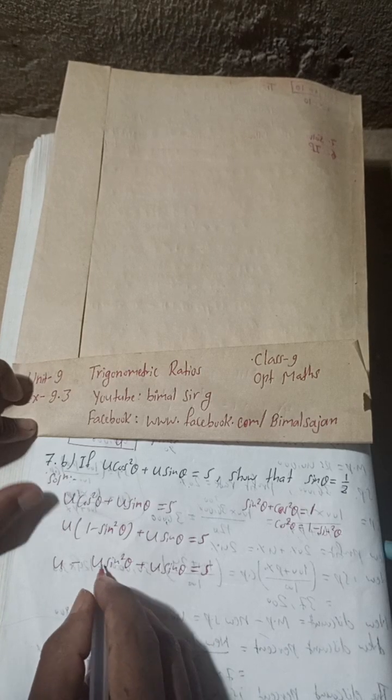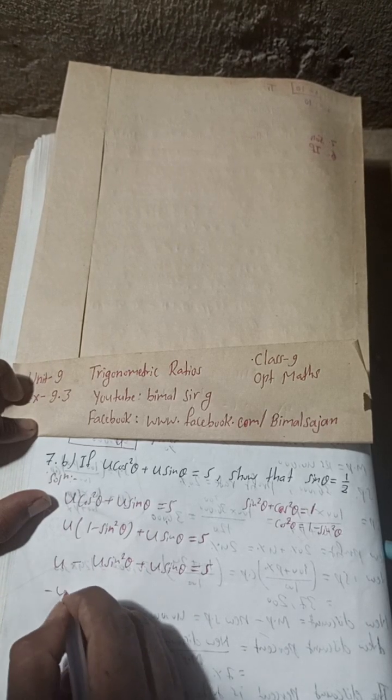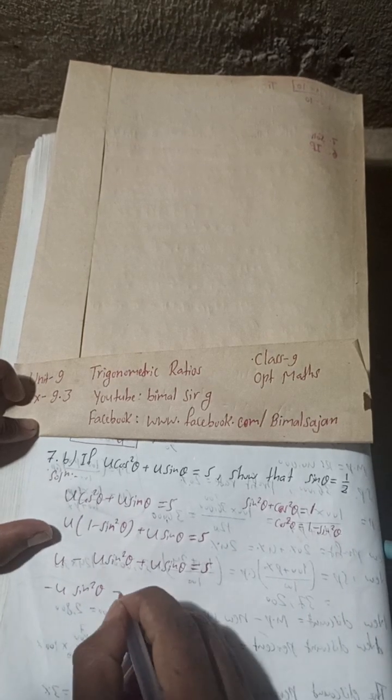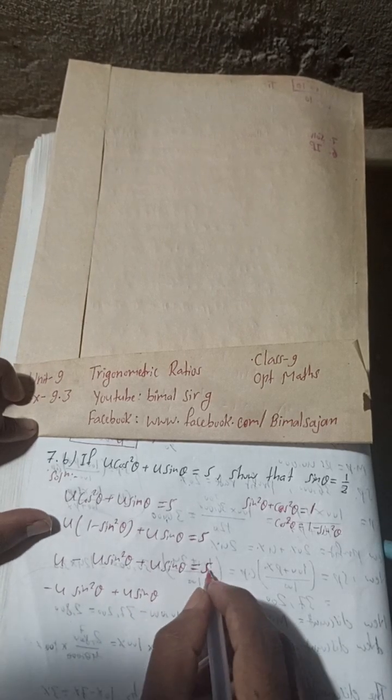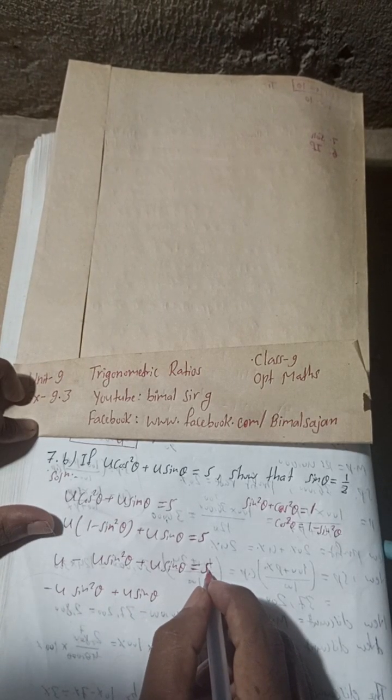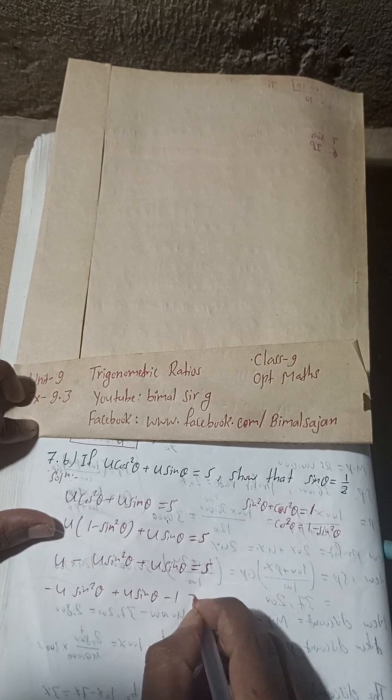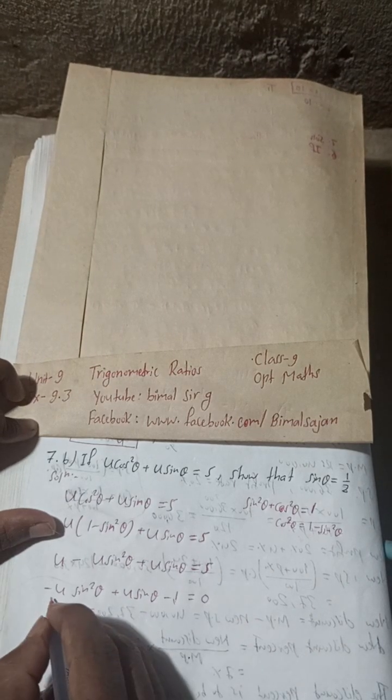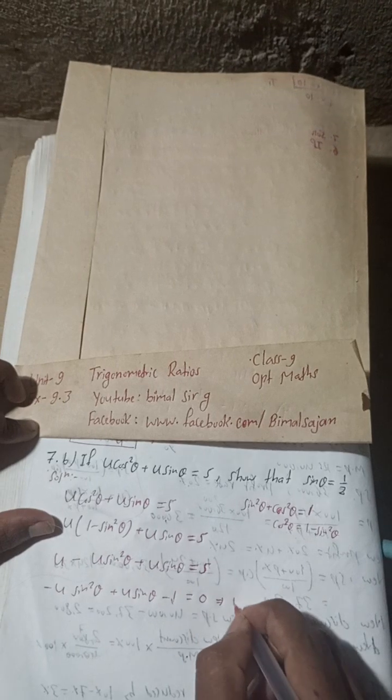Now here, -4sin²θ + 4sinθ, and this 4, when we take this to the other side, 4 - 5 will be -1. So: -4sin²θ + 4sinθ - 1 = 0. Now I will take minus common.